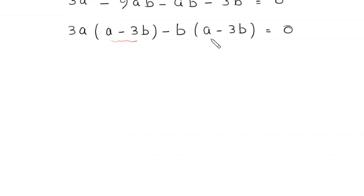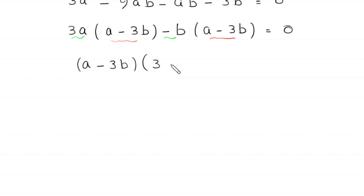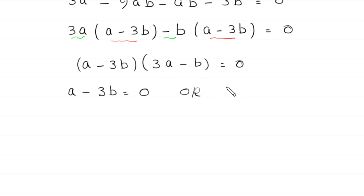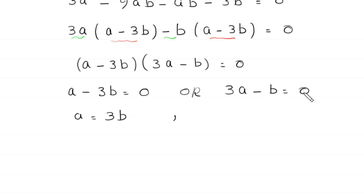We factor out 3a from the first two terms giving 3a(a - 3b), and factor out -b from the last two terms giving -b(a - 3b). Since (a - 3b) is a common factor, we get (a - 3b)(3a - b) = 0. So either a - 3b = 0, meaning a = 3b, or 3a - b = 0, meaning b = 3a.